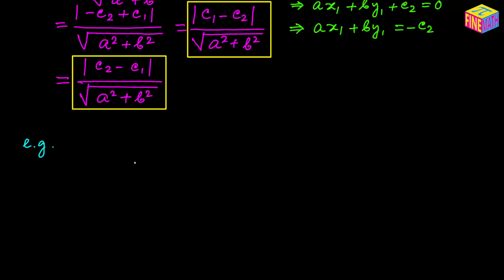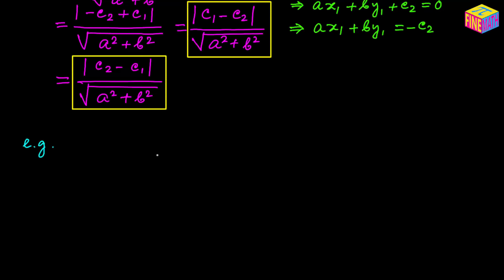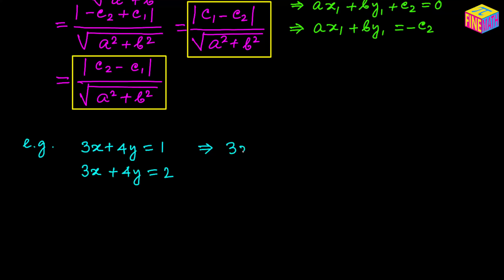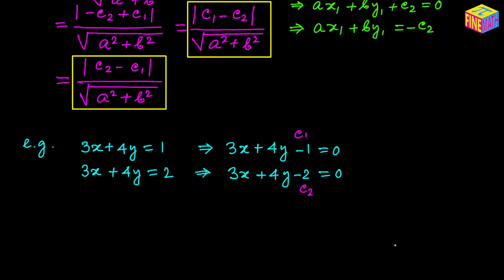Let's take an example. Suppose we have been given the equations of two parallel lines and asked to find the distance between them. Let's convert them into ax + by + c form. The first line can be written as 3x + 4y − 1 = 0 and the second as 3x + 4y − 2 = 0. Here c₁ = −1 and c₂ = −2.